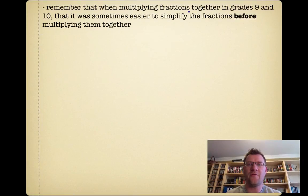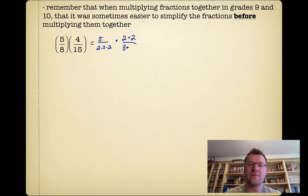Remember that when multiplying fractions together in grades 9 and 10, it was sometimes easier to simplify the fractions before multiplying them together. For example, if we had 5/8 multiplied by 4/15, we used to just factor it. Turn the 8 into 2 times 2 times 2 into its prime factors, and then multiply that by 4/15, which is the same as 2 times 2 over 3 times 5.